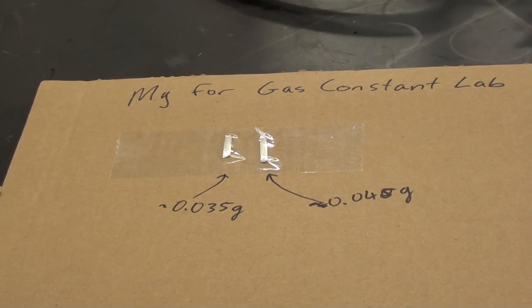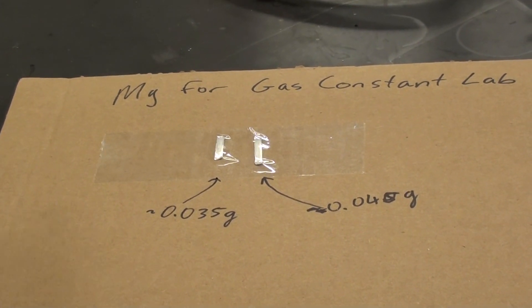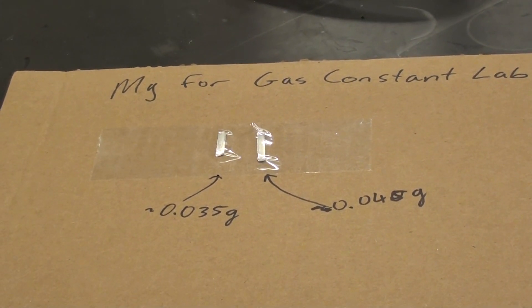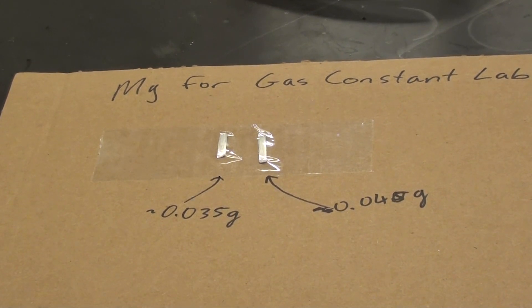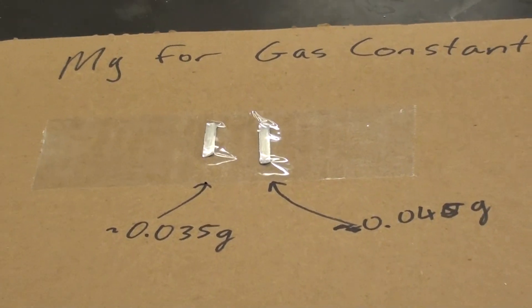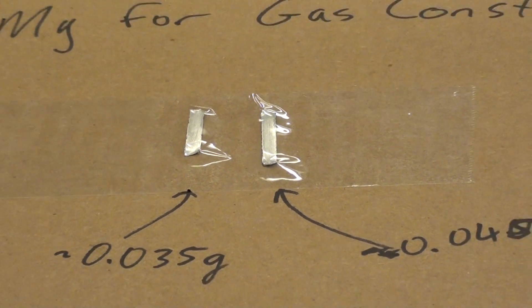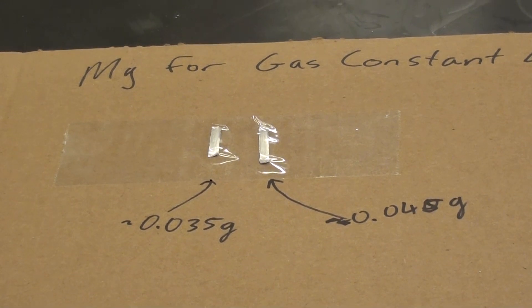This is a setup for the gas constant lab. The first thing we'll be doing is measuring out a piece of magnesium. I've got attached to this cardboard a length of magnesium that weighs about 0.035 grams and another one that weighs about 0.045 grams. We want the mass of our magnesium to be somewhere in between there, ideally somewhere in the 0.040 gram region.